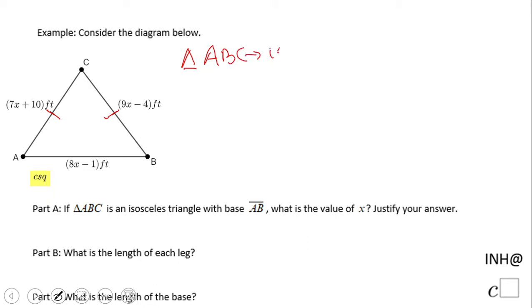An isosceles triangle is a triangle that has two equal sides, these two right. And the base is AB. AC and BC are called legs.